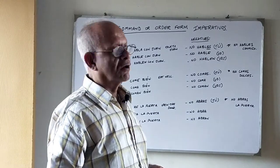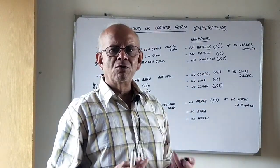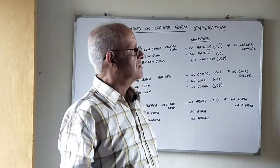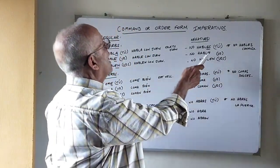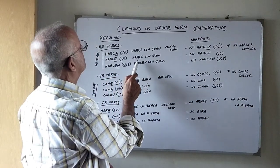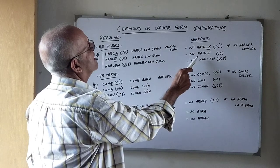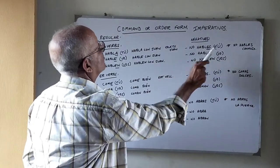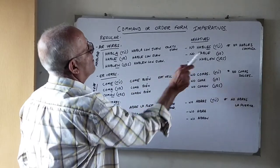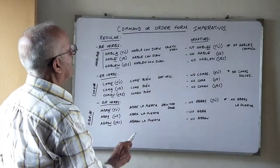For AR verbs, the tú negative command: we replace the A of the tú form with ES. So NO HABLES means 'don't talk.' For example, NO HABLES CONMIGO means 'don't talk to me.' In the usted form, it stays the same as the positive — NO HABLE CON JUAN. And the ustedes form is also the same: NO HABLEN.